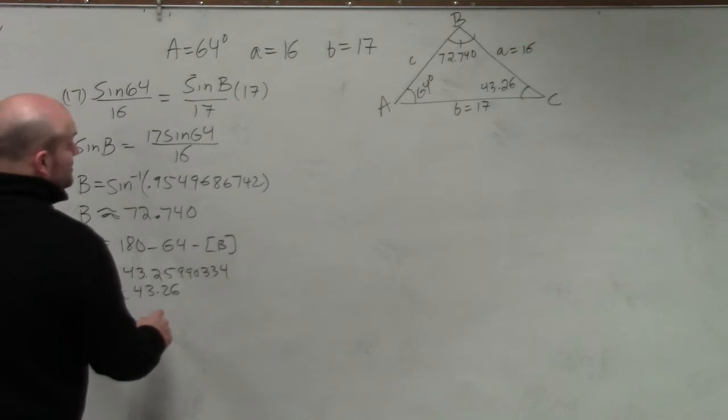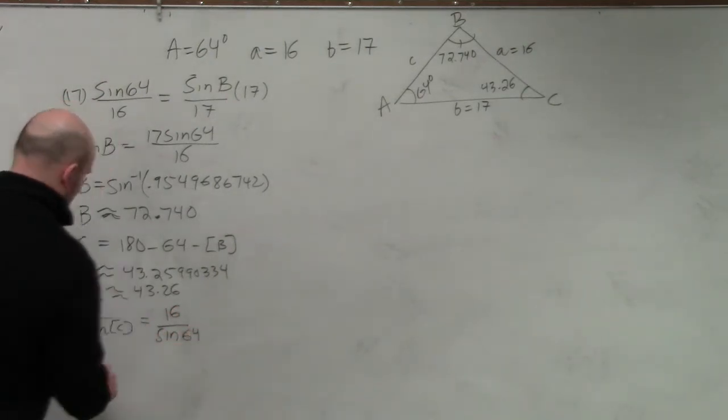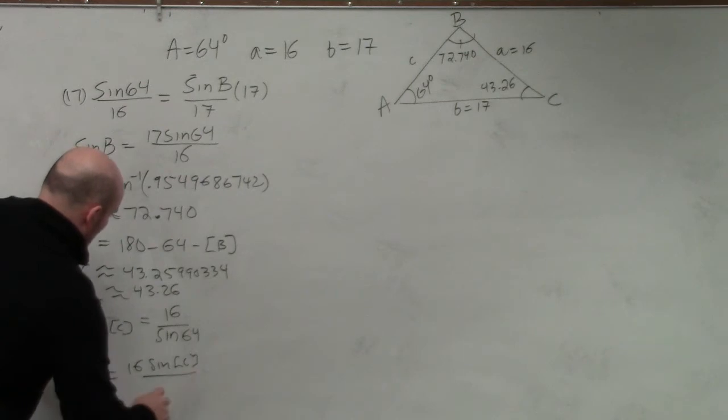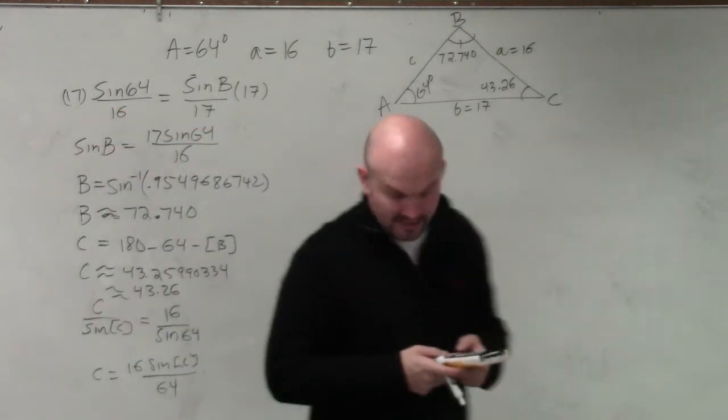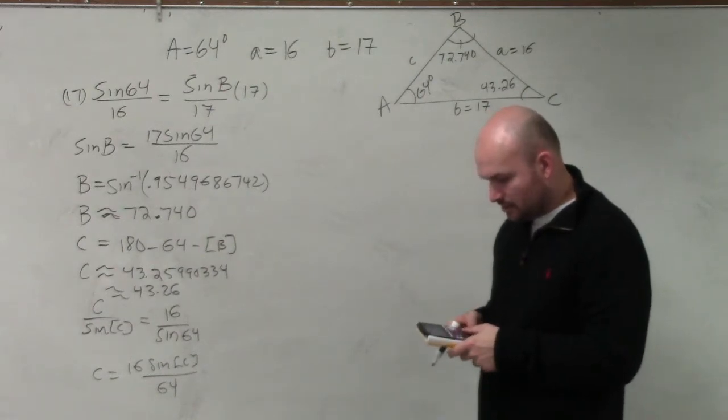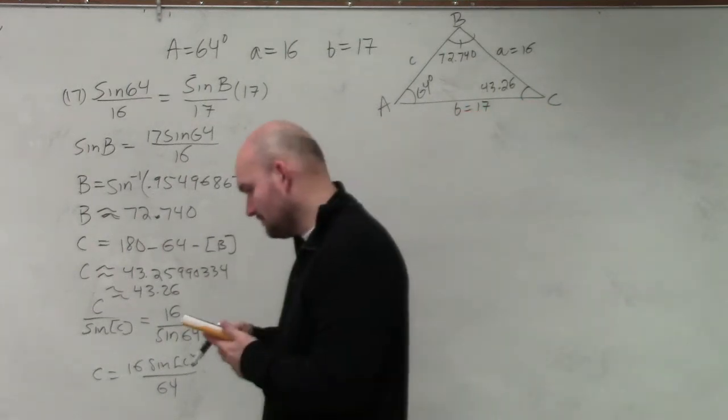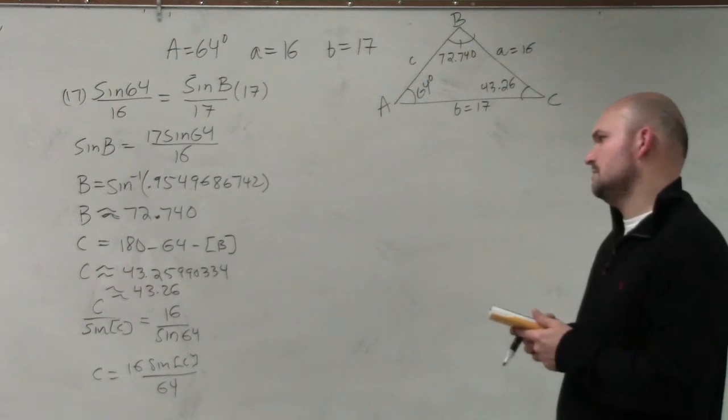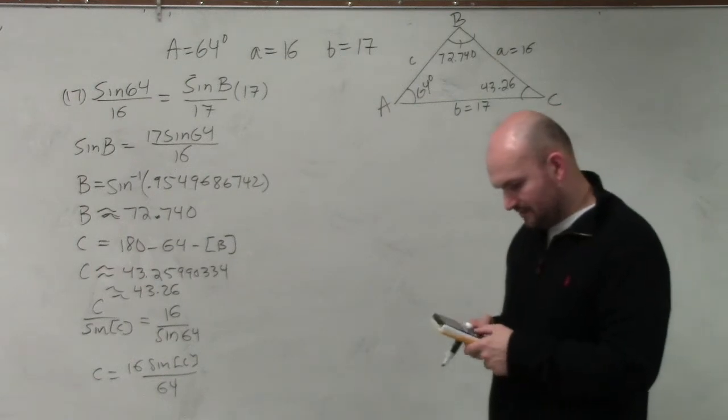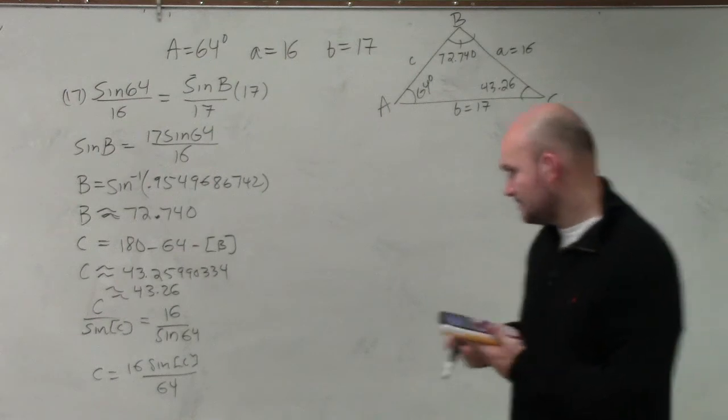So C over sine of C equals 16 over sine of 64. So therefore, C is equal to 16 times the sine of C all over 64. So now I just type in 16 times the sine of C. So I do alpha C, close my parentheses, and then divide that by 64. Uh-oh, what did I do wrong? Oh, that's sine of 64. So 16 times the sine of alpha C divided by the sine of 64.